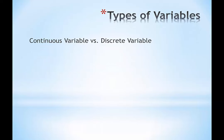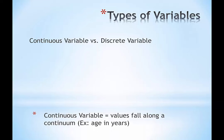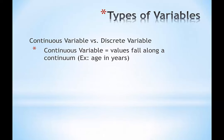Another distinction—not necessarily mutually exclusive of the prior one—is continuous variables versus discrete variables, and there is a fuzzy boundary about when one becomes the other. A continuous variable has values that fall along a continuum and can be any value along that continuum. If I were to ask you your age in years, you might say 26, or 25 years and seven months—there's almost an infinite number of possible stops along the number line. You could think about continuous variables along a number line.